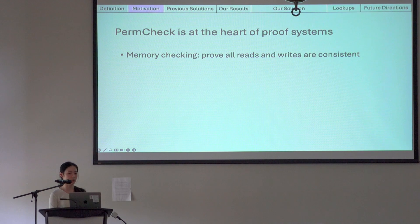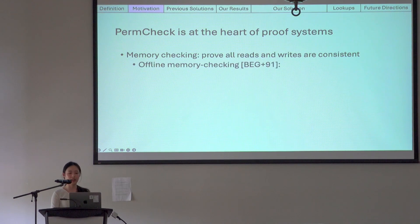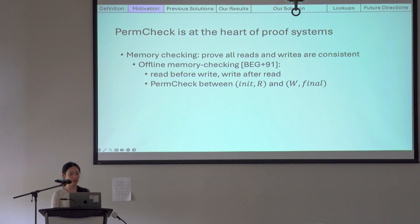Besides circuits, perm check also has applications in memory checking, where we prove all the reads and writes are consistent. In the classic offline memory checking idea, we compile the list of reads and writes by doing read before write and write after read. And in the end, we do a perm check to prove that the initial state and the read list together is a permutation of the write list and the final state.